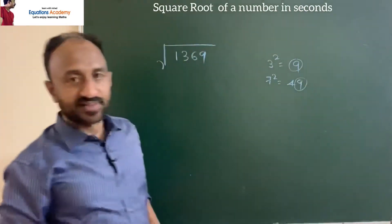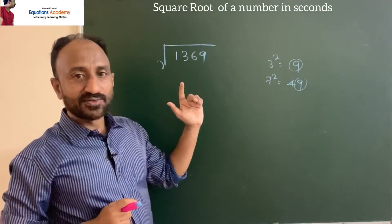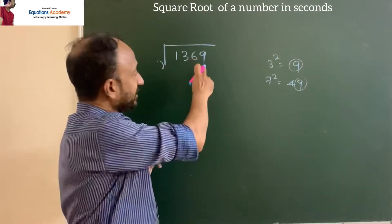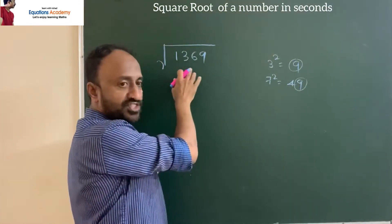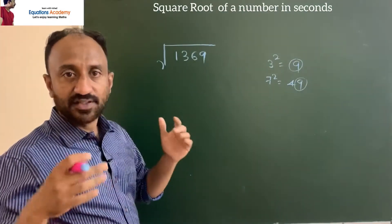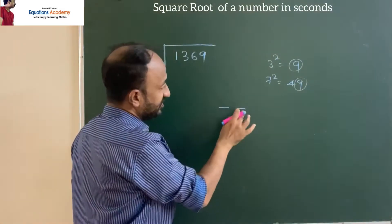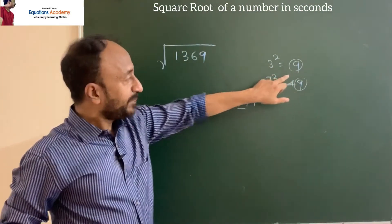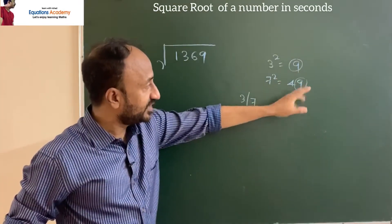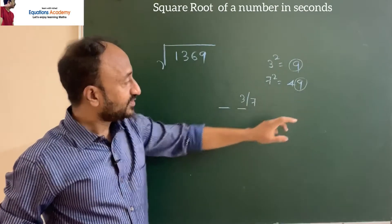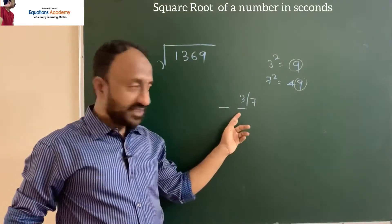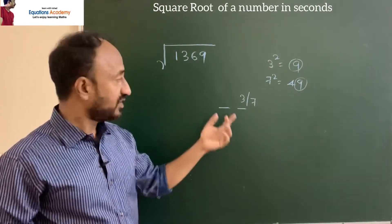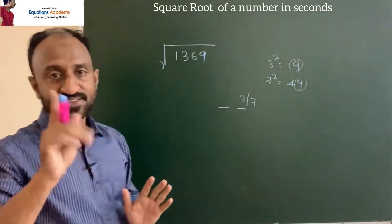We need a number whose square gives 9 at the unit's place. So in our answer there are two possibilities at the unit's place. Since this is a four-digit number, the answer will be in two digits. The unit's place digit will be either 3 or 7, because 3 squared is 9 and 7 squared ends in 9. That is the primary step — we have to confirm which digit will come, whether 3 or 7.